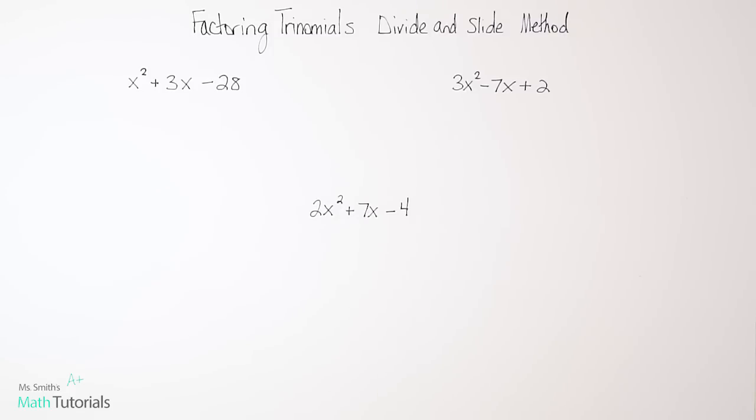I've got a number of other videos on how to factor trinomials using other methods including the xbox method, just using the traditional X and then the factor by grouping method. This is definitely the shortest. So we have three examples we're going to walk through together. This divide and slide method is still going to utilize the X that we create as does every method that I teach. I just think it's a really great way to set up what's happening.